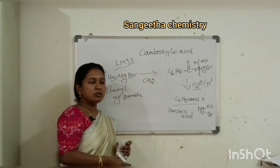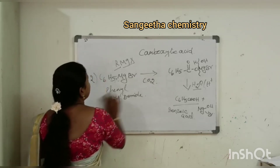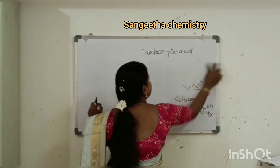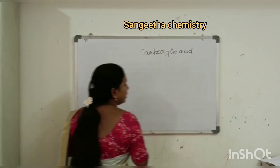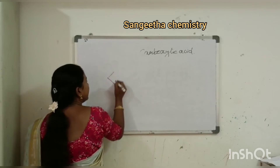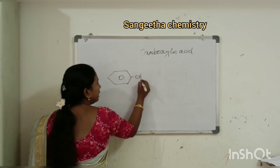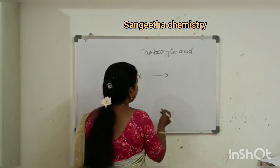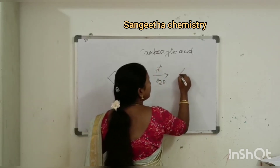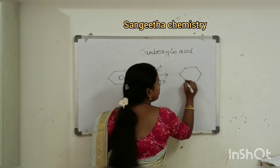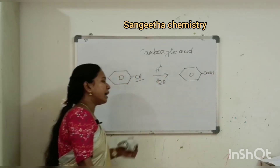Third preparation: acid hydrolysis of phenyl cyanide. Phenyl cyanide (C6H5CN) undergoes acid hydrolysis with addition of water molecules to give benzoic acid, an aromatic acid.